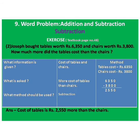Number 2. Joseph bought tables worth Rs. 6,350 and chairs worth Rs. 3,800. How much more did the tables cost than the chairs?